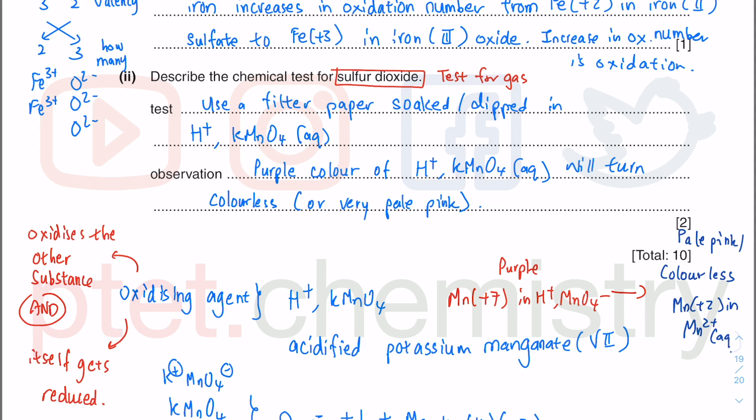These tests for cations, anions, gases, and flame tests for cations will never be given to you in a theory paper or alternative-to-practical paper. That's it for this overall 10-mark question. Thank you for watching — subscribe to the channel and follow at ptet.chemistry on Facebook, Instagram, Twitter, and Telegram.